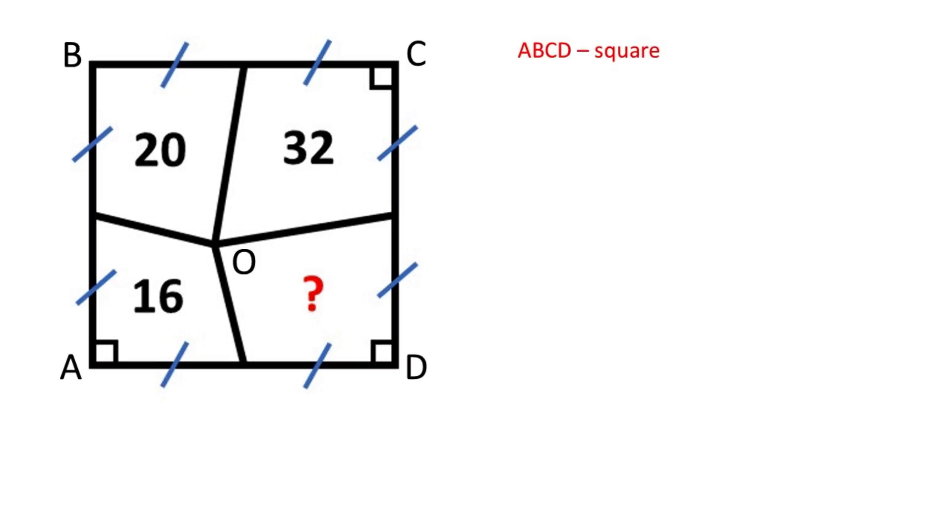ABCD is a square. Let's connect point O to points A, B, C, and D. OE is the median of the triangle BOC.